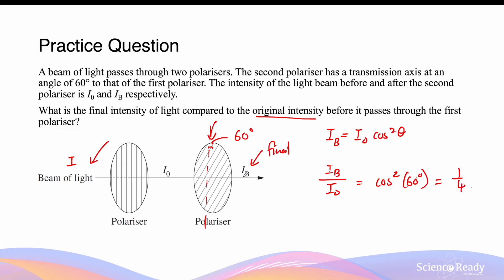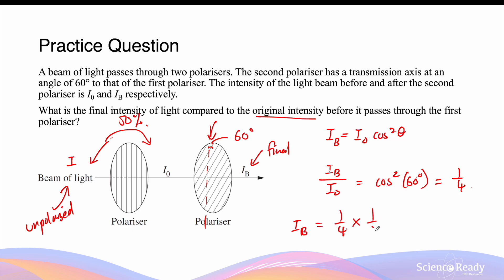But the question asks for the final intensity compared to the original intensity before the first polariser. If we assume the beam of light at the beginning is unpolarised, then after passing through the first polariser the intensity will be reduced by 50%. So I0 is half the value of the initial intensity. Therefore IB will be one quarter times one half of the original intensity, which yields a value of one eighth, or 12.5%. So the final intensity after passing through the second polariser is only 12.5% of the original unpolarised light intensity.